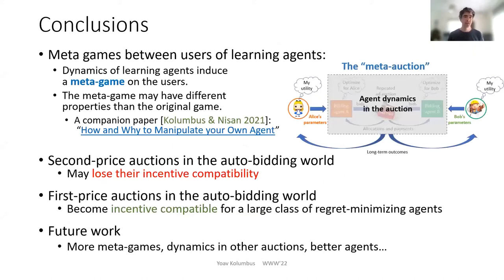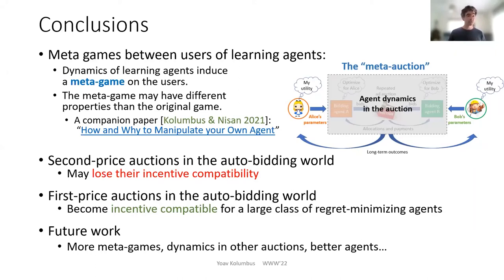To recap, our conclusions are: first, the dynamics of learning agents induce a metagame on the users, and these metagames may have significantly different properties than the original game as defined. We study other metagames in a companion paper. Second, the takeaway message is that things can be quite different in the auto-bidding world — second price auctions may lose their incentive compatibility as shown for multiplicative weights, while first price auctions become incentive compatible for a large class of regret-minimizing agents. Future work includes studying more metagames, dynamics in more complex auctions, and perhaps designing agents to do something better than just minimize regret.